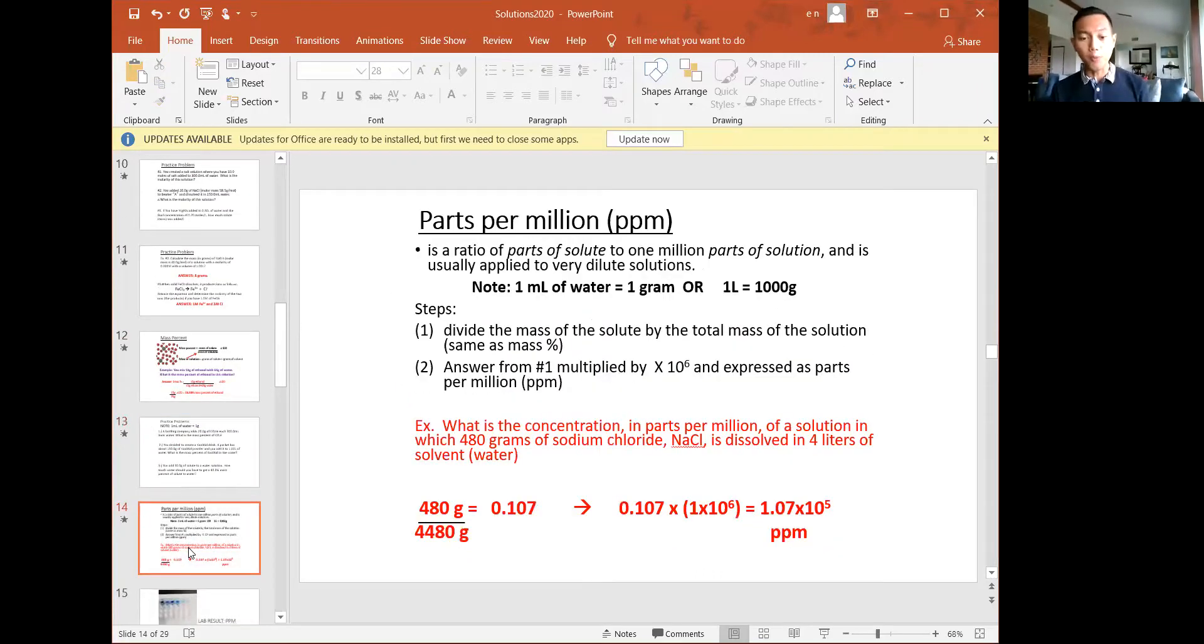The next one is called parts per million, which is very similar to mass percent. The key difference is step one is the same. It'll be the mass of the solute over the mass of the entire solution. What's different is step two. Parts per million is a unit of concentration that's often used in environmental science. So when they're talking about amount of pollution in water or amount of pollution in air, this is often the unit that they would use.